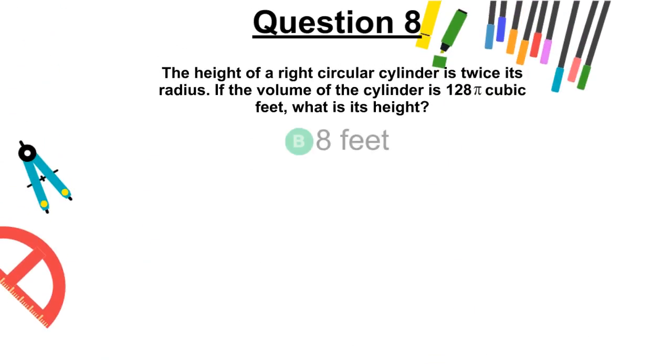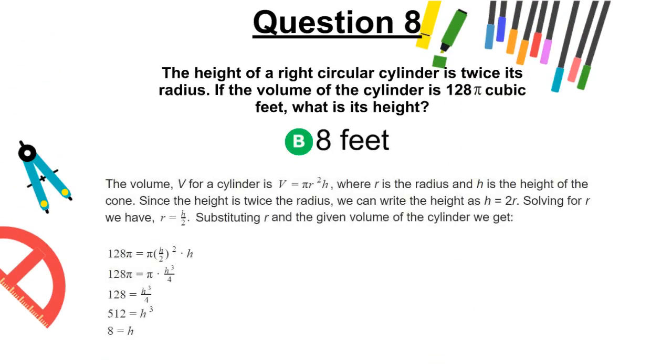The correct answer is B, 8 feet. The volume, v, for a cylinder, is v = πr²h, where r is the radius and h is the height of the cone. Since the height is twice the radius, we can write the height as h = 2r. Solving for r, we have r = h/2. Substituting r in the given volume of the cylinder, we get the following.